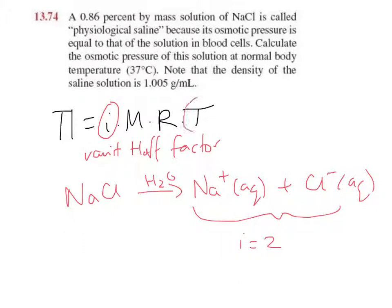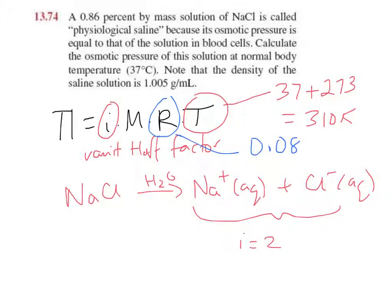We've got the temperature and the temperature is the absolute temperature. So we need to add 273 to the Celsius temperature and that gives us 310. And we have the gas constant. That's something you probably want to keep in your memory banks. So it's 0.08206 and that has units of atmosphere liters per mole Kelvin. And that's probably the one we want to use because we'll have moles per liter for molar concentration.